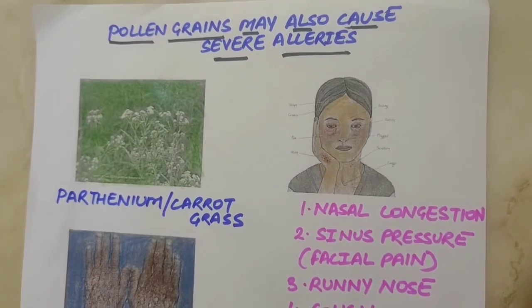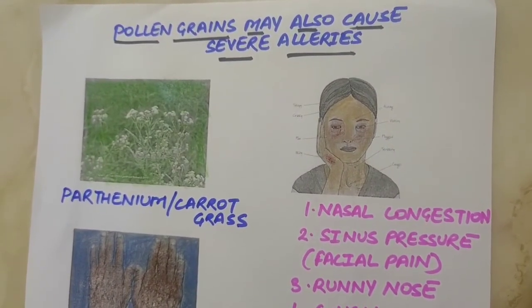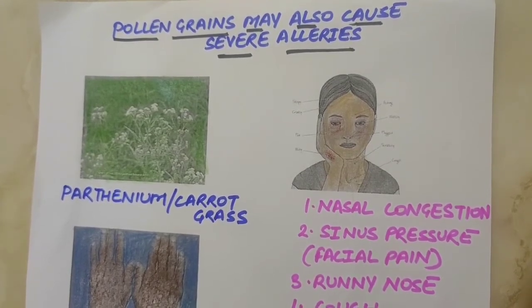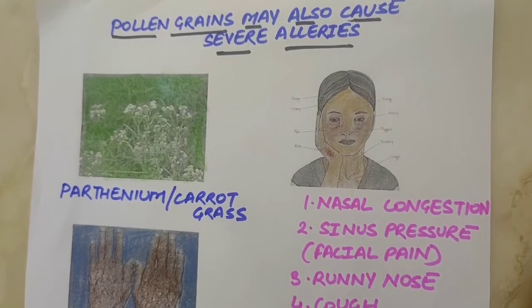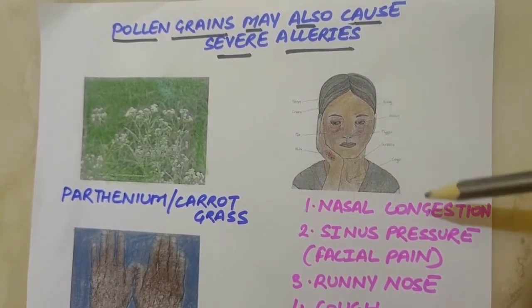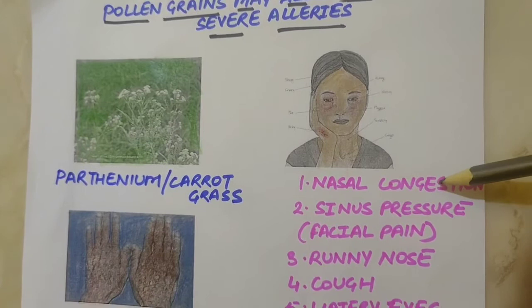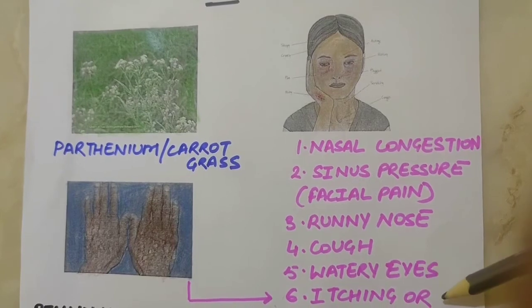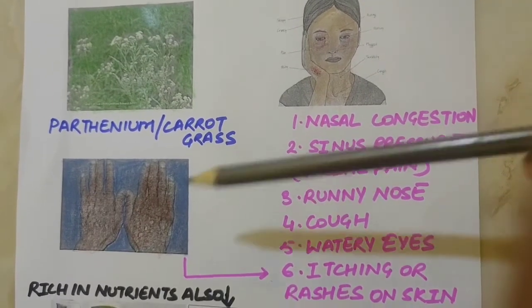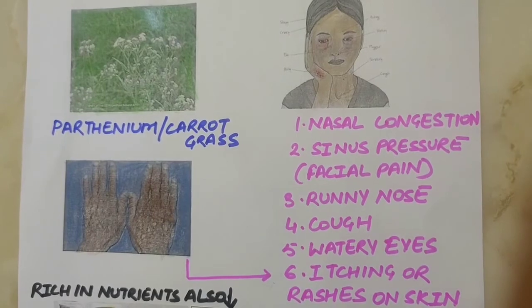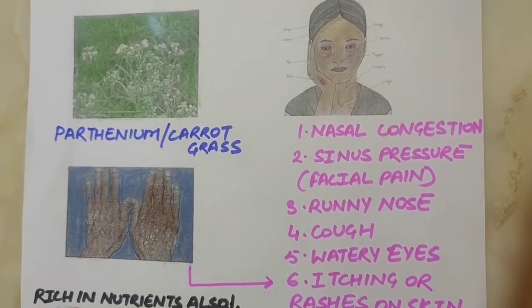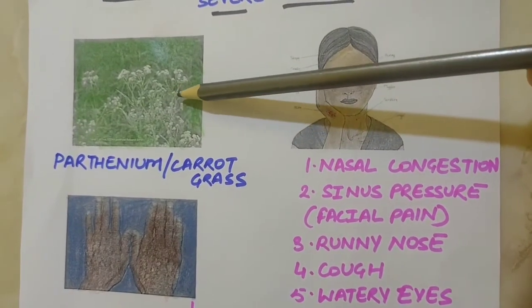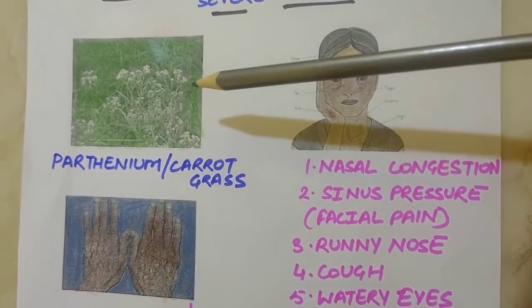Pollen grains of many species cause severe allergies and bronchial afflictions in some people, leading to chronic respiratory disorders like asthma and bronchitis. Common allergy symptoms include nasal congestion, sinus pressure or facial pain, runny nose, cough, watery eyes, itching and rashes. One point to be mentioned here is that parthenium or carrot grass was imported into India as a contaminant in wheat.